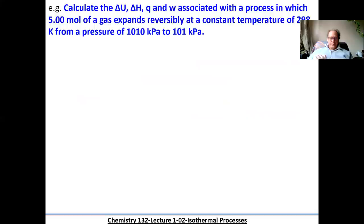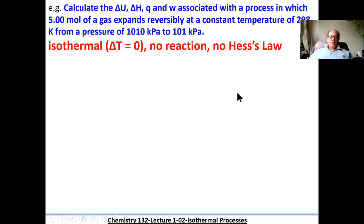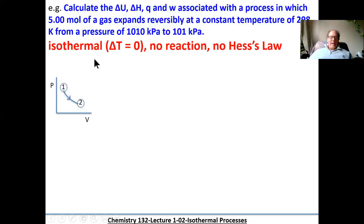Welcome back. Now we're going to perform the calculation. We pick out the important information: it's isothermal, constant temperature, 298 Kelvin. There's no mention of a chemical reaction, so we don't have to worry about Hess's law. We know the gas is expanding, so volume is increasing and pressure slowly decreasing. Always a good idea to sketch a diagram of what the system is doing so you understand what is happening.